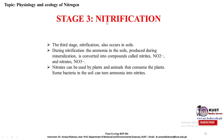Stage three is nitrification, which occurs in the soil. During nitrification, the ammonia in the soil produced during mineralization is converted into compounds called nitrites and then nitrates. Nitrates can be used by plants and animals that consume the plants. Some bacteria in the soil can turn ammonia into nitrites.